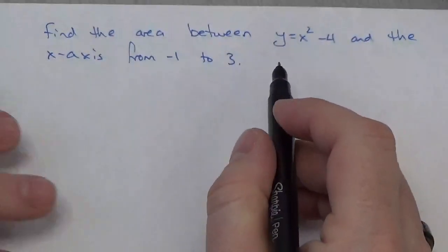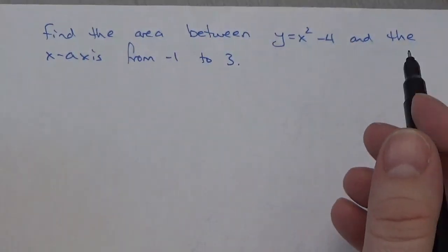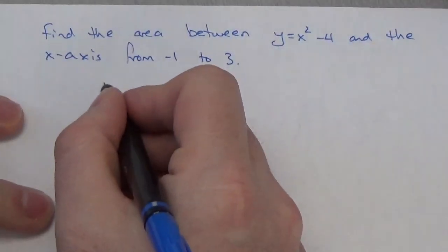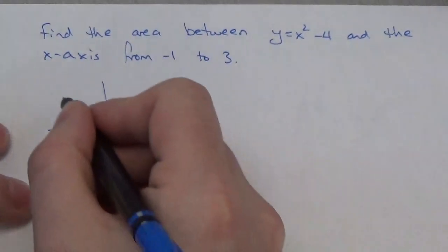Okay, so in this question, we're looking for the area between y equals x squared minus 4 and the x-axis from negative 1 to 3. Okay, again, let's get a bit of a visual as to what's going on here.